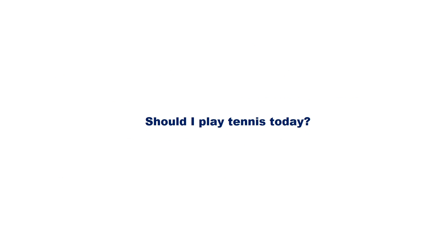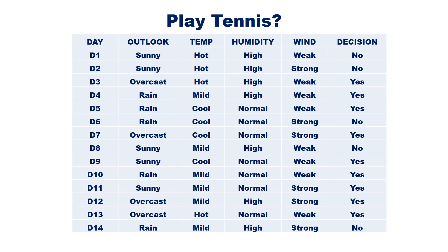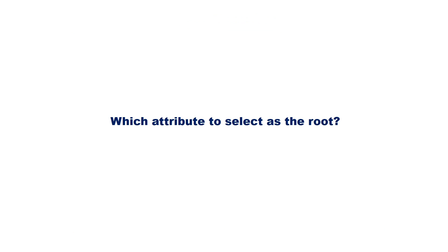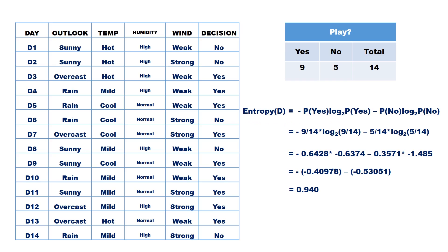Should I play tennis today? Let us see the same example using the ID3 algorithm. The decision to play tennis depends on 4 factors: outlook, temperature, humidity, and wind. We have 14 training examples. First, select the best attribute to be considered as the root node. Entropy of the decision equals minus (9/14) log2(9/14) minus (5/14) log2(5/14), which equals 0.940.